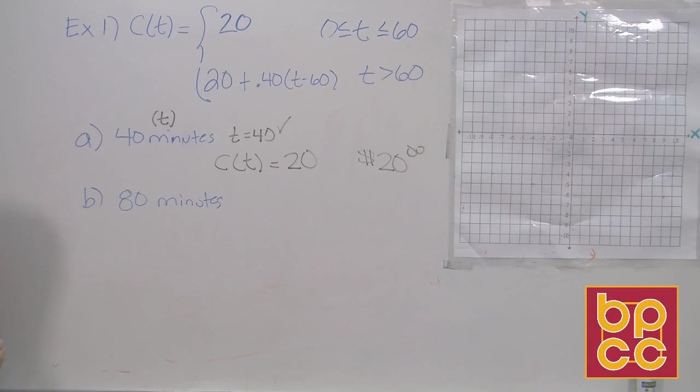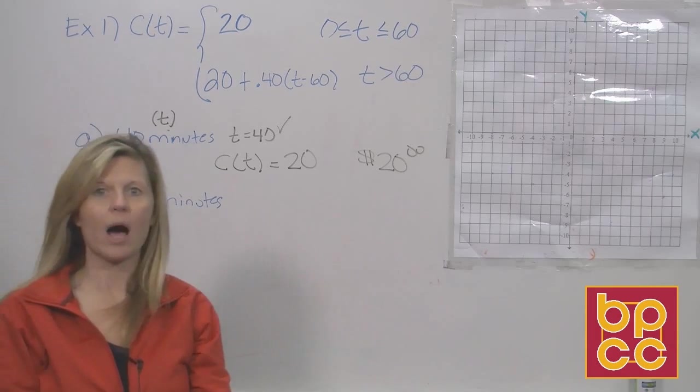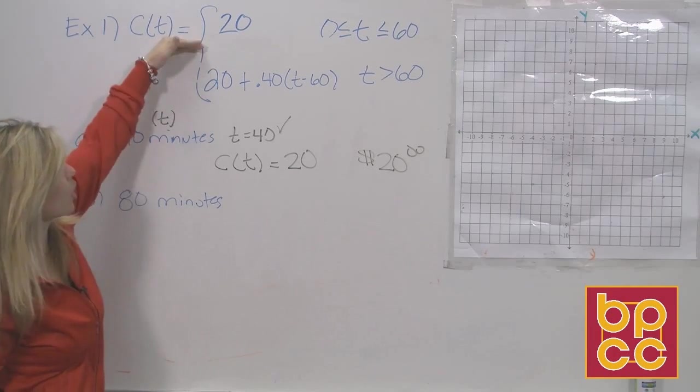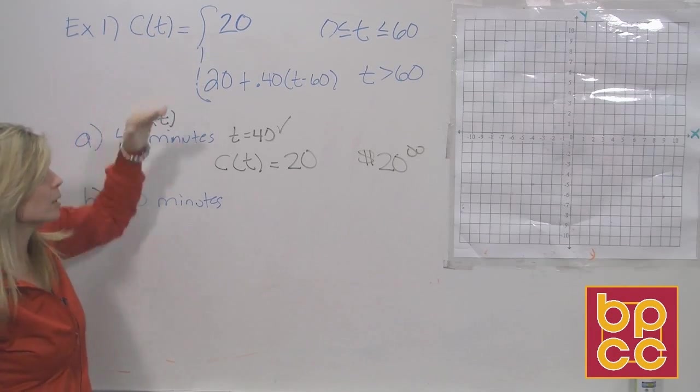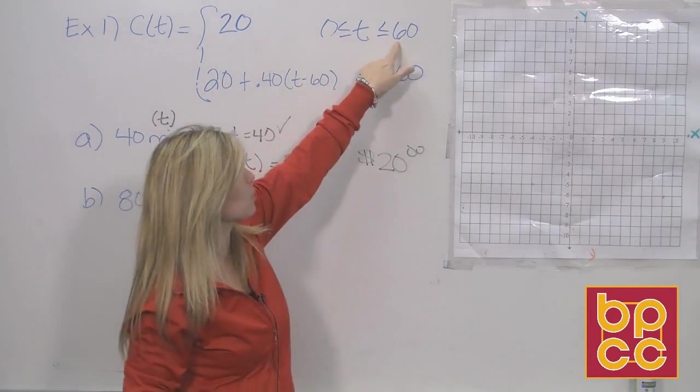Now, suppose that month you talked for 80 minutes. Again, your function is in pieces, hence the word piecewise. If we talk for 80 minutes, which piece is our cost? The top or the bottom? Well, again, we're going to look here. Is 80 between 0 and 60? No, it's not. We're not looking at the top piece.